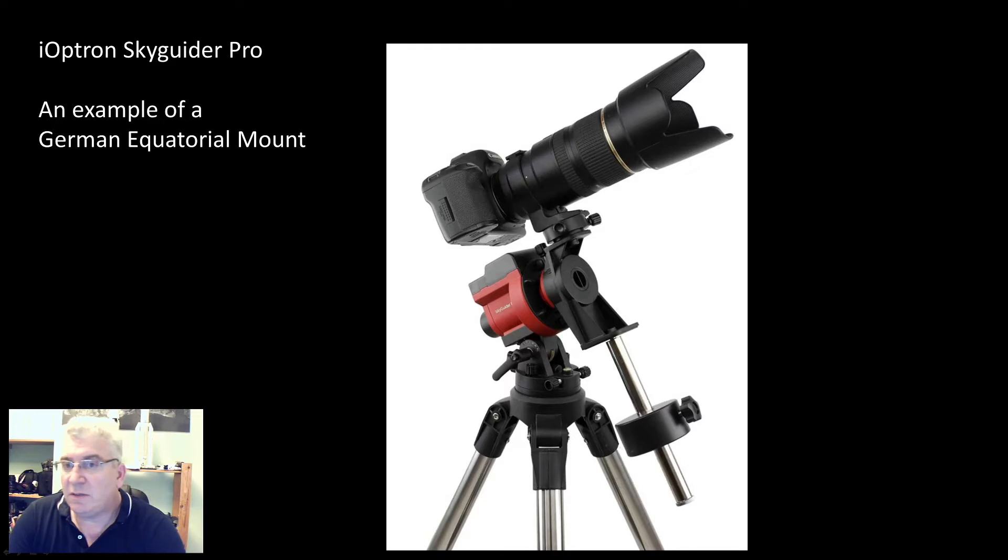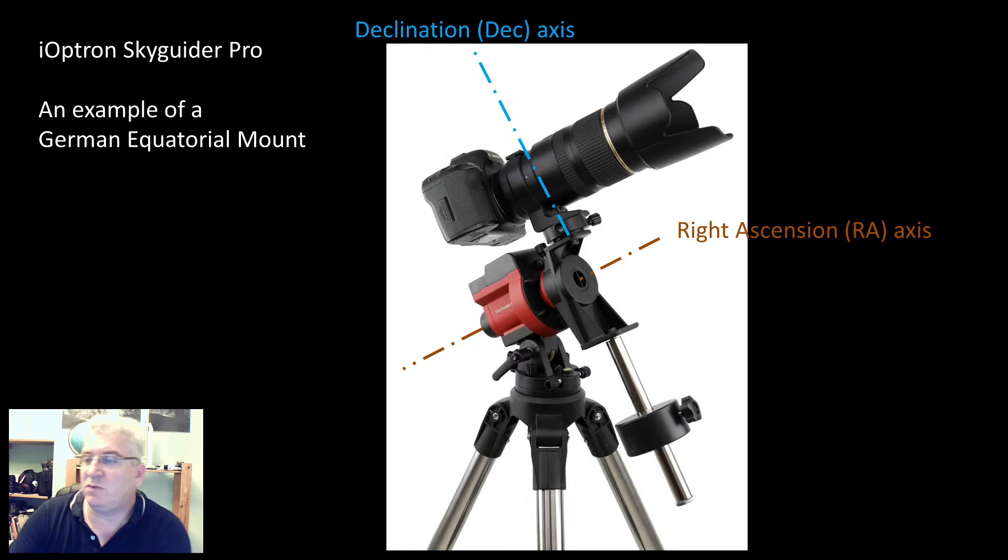Here's an example of a German equatorial mount. In this case, it's an Ioptron Skyguider Pro. It essentially comprises of a piece of hardware that sits in between the tripod and the camera. The key things to point out, firstly, is the right ascension axis, which you see here. That's the axis that needs to be aligned to be parallel with the Earth's rotational axis. We have the declination axis, which is at right angles to the right ascension.